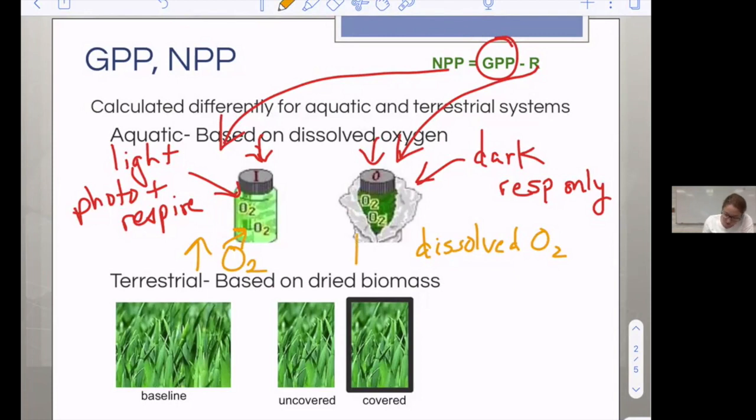In the one that's in the dark, we're going to have a decrease in oxygen over the course of time. You would be given data about the starting value and the later values and be asked to conclude what the net primary productivity is, what the respiration is, and what the gross primary productivity is.